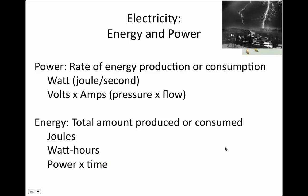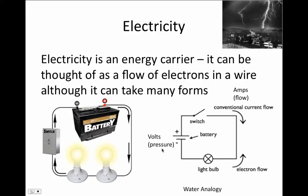There's still one aspect of electricity we haven't talked about — resistance — but we'll cover that in a minute. For now, let's review the units of energy and power. Power is the rate of energy production or consumption, measured in watts — which is just another name for a joule per second — and it equals volts times amps. So if we have 10 volts and 100 amps flowing, we get 1,000 watts dissipated by the light bulb.